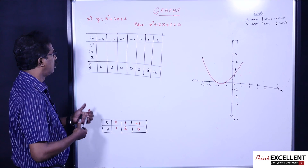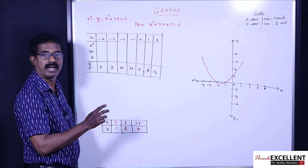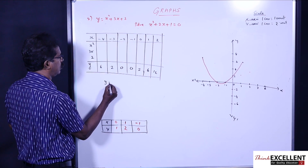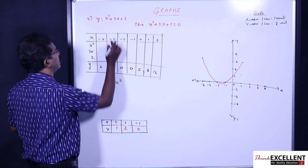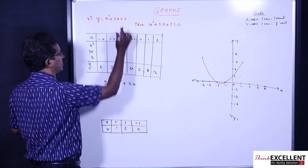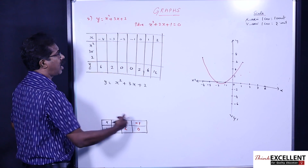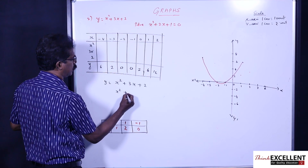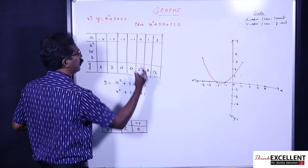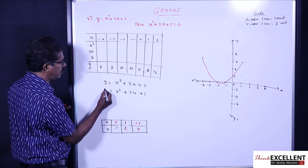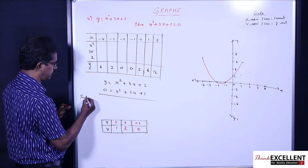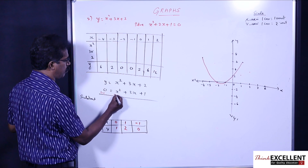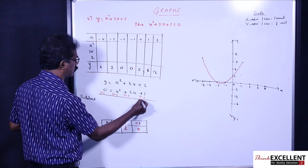Now we have to solve the second equation. Using the same method as before: write the graph equation at the top — y = x² + 3x + 2 — and below it write the equation to solve: x² + 2x + 1 = 0. Now subtract. When you subtract, change the sign of the bottom equation.